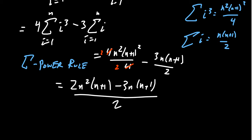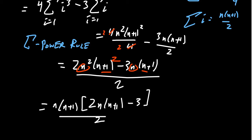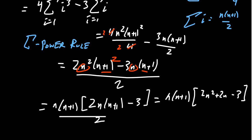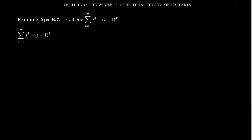Now let's factor out any common factors. Both terms share a factor of n and a factor of (n+1) — and that should be (n+1)² on the first term, I forgot to write the square earlier. Factoring out n(n+1) leaves behind 2n(n+1) - 3. Distributing the 2n through (n+1) gives 2n² + 2n, so the full expression becomes n(n+1)(2n² + 2n - 3) all over 2. The quadratic 2n² + 2n - 3 doesn't factor further, so this is our final simplified formula — a rational function in n.